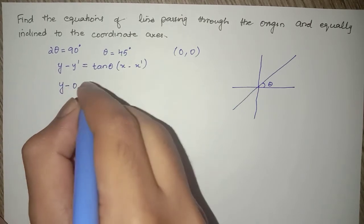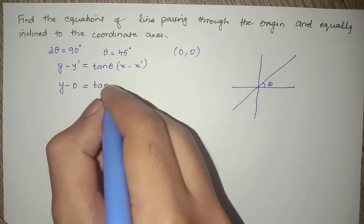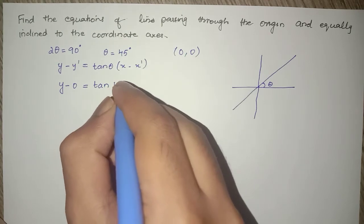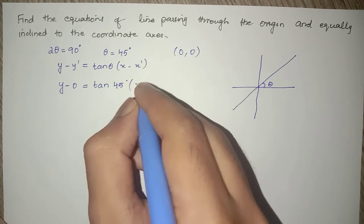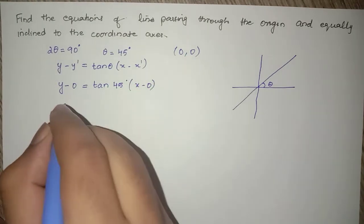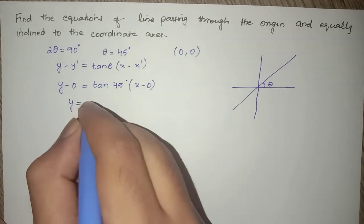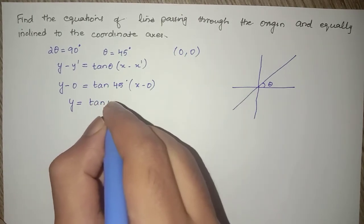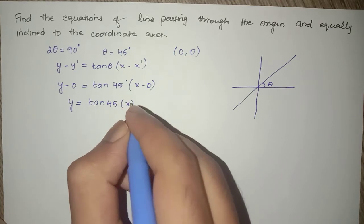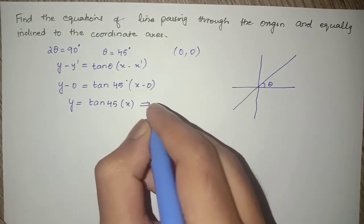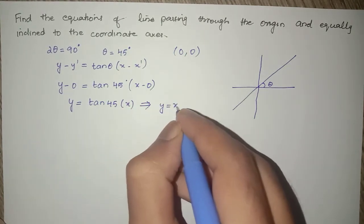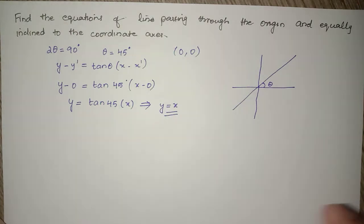y - 0 = tan(θ), which is tan(45°)(x - 0). This equals y = tan(45°)x, or y = x. This is one of our equations; we have another equation too.